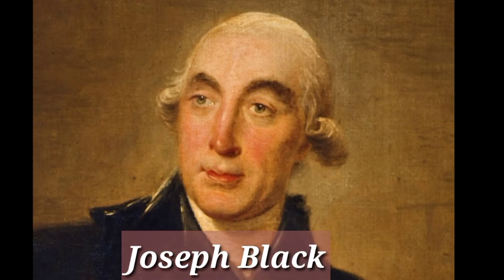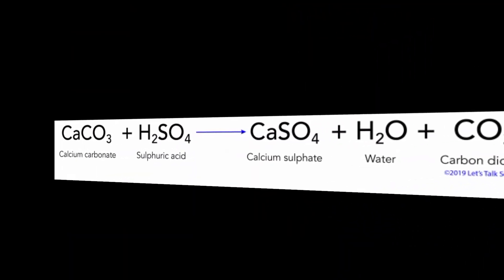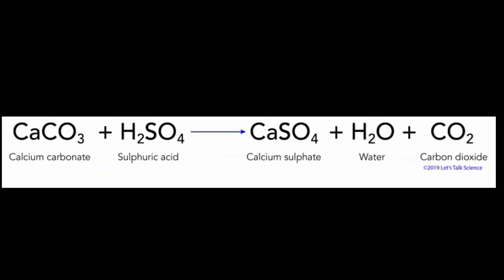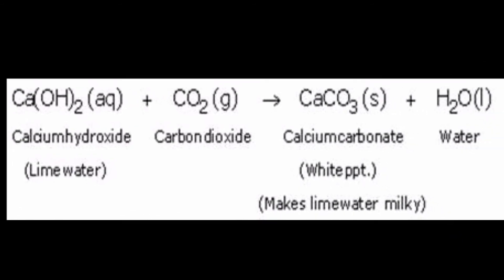The properties of carbon dioxide were further studied in the 1750s by the Scottish physician Joseph Black. He found that limestone could be heated or treated with acids to yield a gas, which he called fixed air. He observed that the fixed air was denser than air and supported neither flame nor animal life. Black also found that when fixed air, or carbon dioxide, is bubbled through lime water, it would precipitate calcium carbonate.